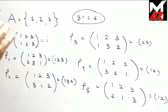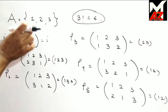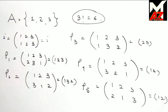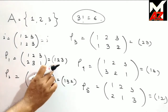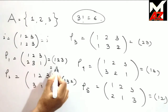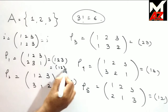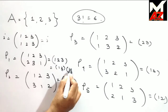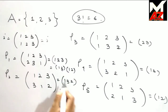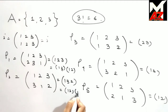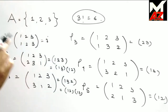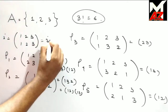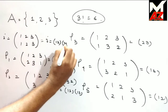So the 6 permutations on the set of 3 symbols are these. Note that ρ2, which is (1 3 2), can also be written as (1 3)(1 2) or (1 2)(1 3), and the identity permutation can always be written in the form (1 2)(2 1).